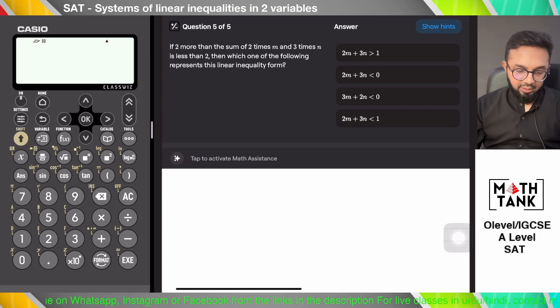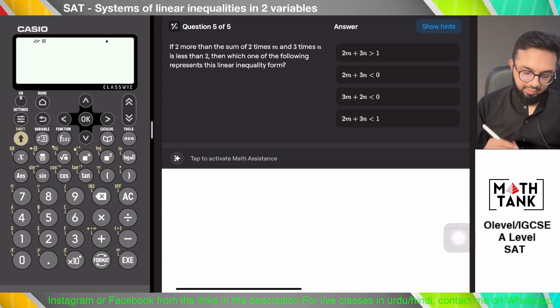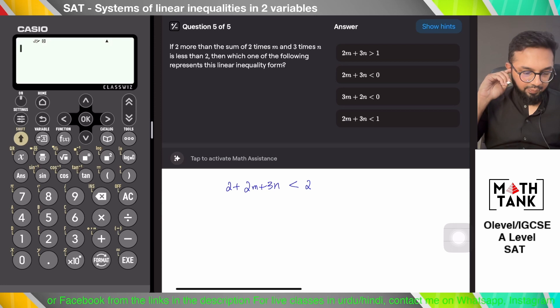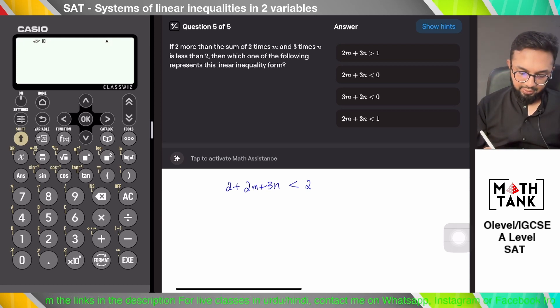If two more than the sum of two times m and three times n is less than 2, which one of the following represents the linear form of the inequality? So 2m plus 3n should be less than 0.